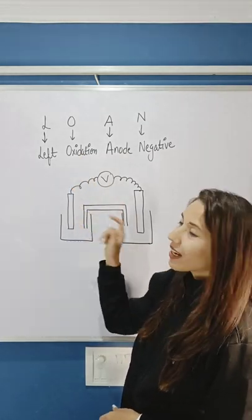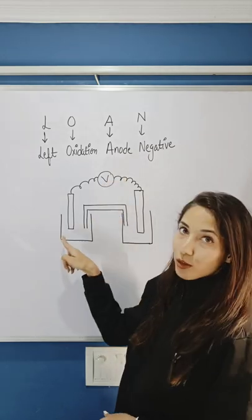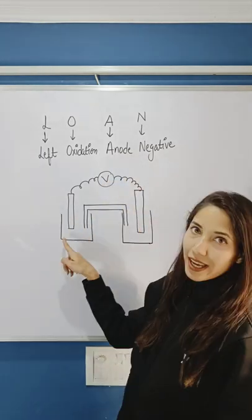The electrode on the left hand side is the anode, and the charge on the anode is negative.